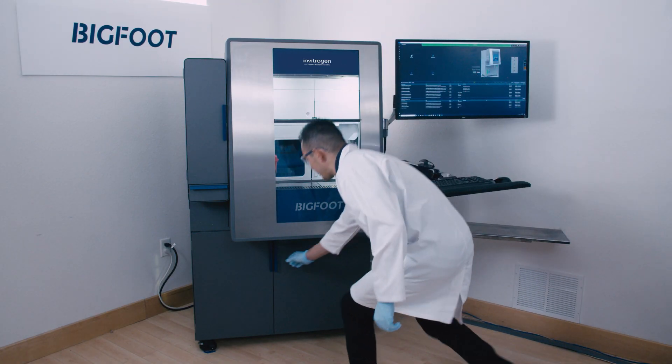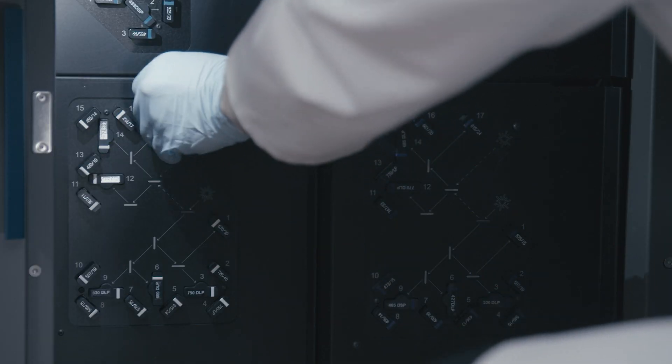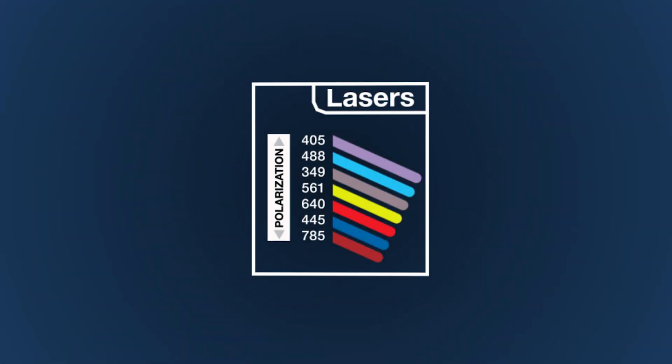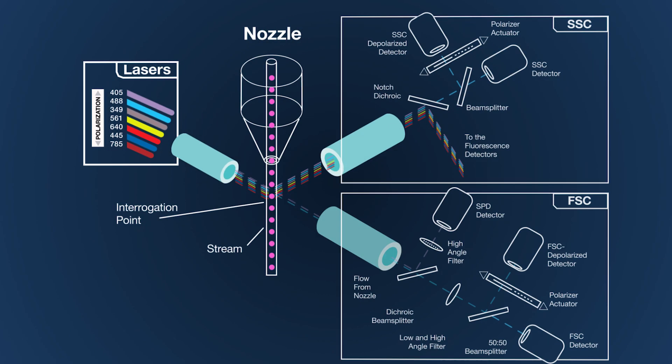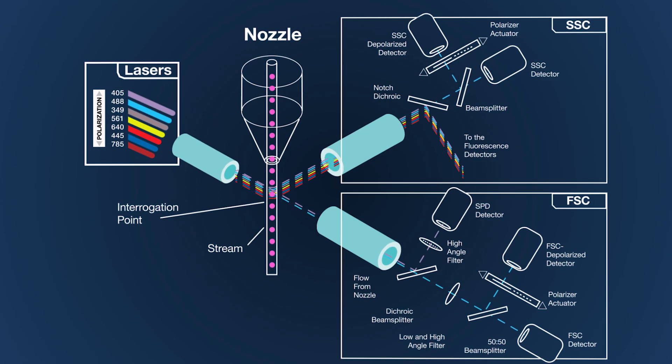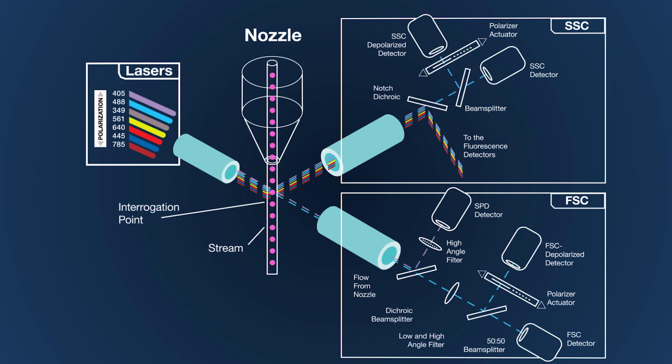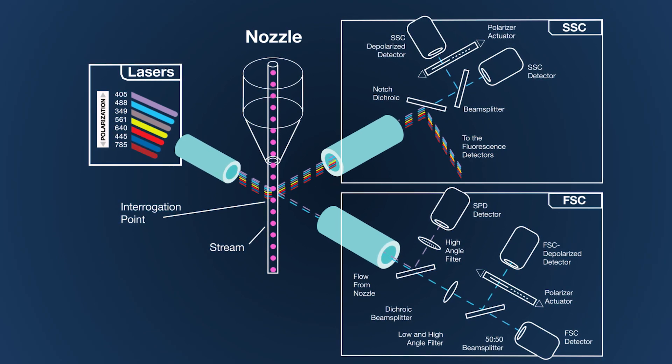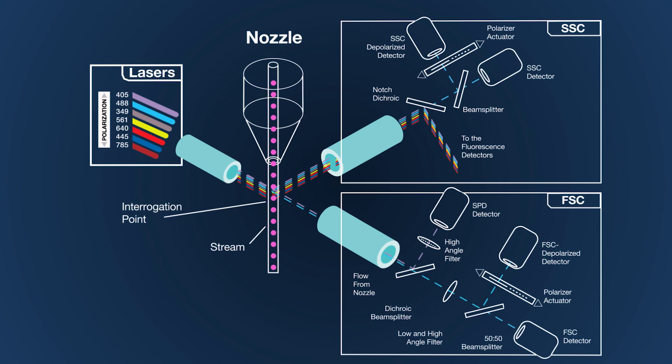The Bigfoot Spectral Cell Sorter can be configured with up to nine lasers and 60 detectors, providing the versatility for both compensation and spectral unmixing. The multiple scatter options offer high flexibility with simultaneous standard small particle multi-laser scatter detection and polarization options.